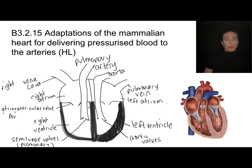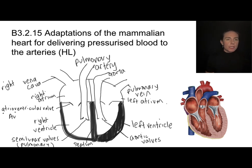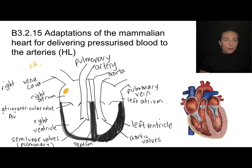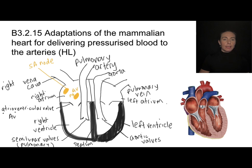I'll also label a couple of other things. The septum is the separation in the middle of the heart, dividing the right side from the left side. In the right atrium, I have something called the SA node — sinoatrial node — which helps initiate the heartbeat. Also in the right atrium is the AV node. We'll talk more about their features in just a minute.